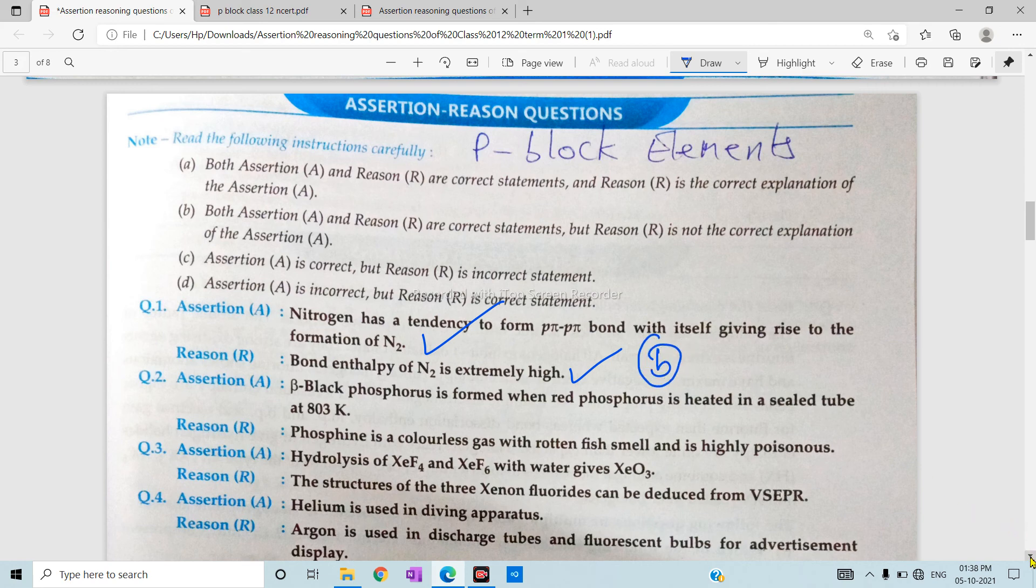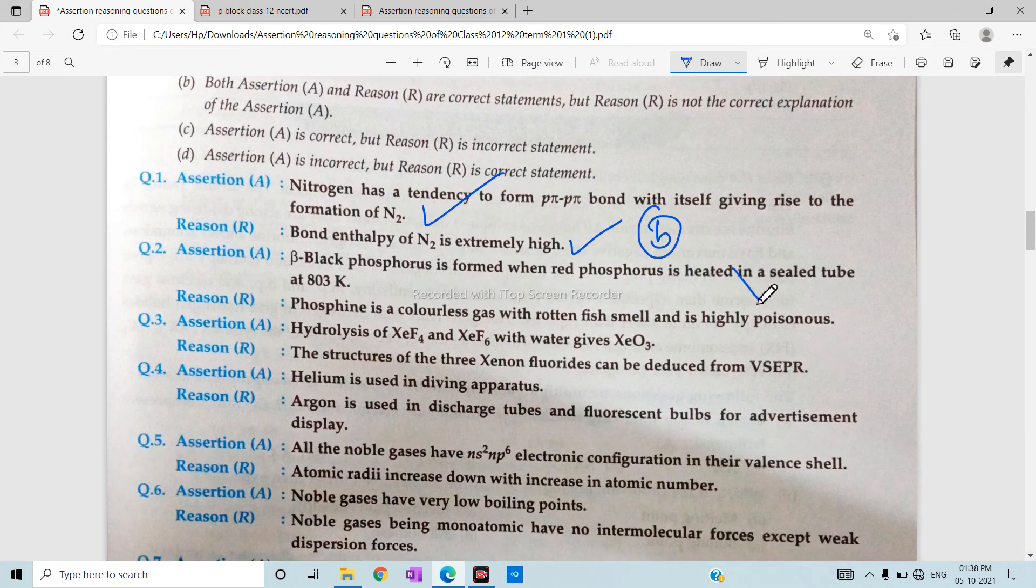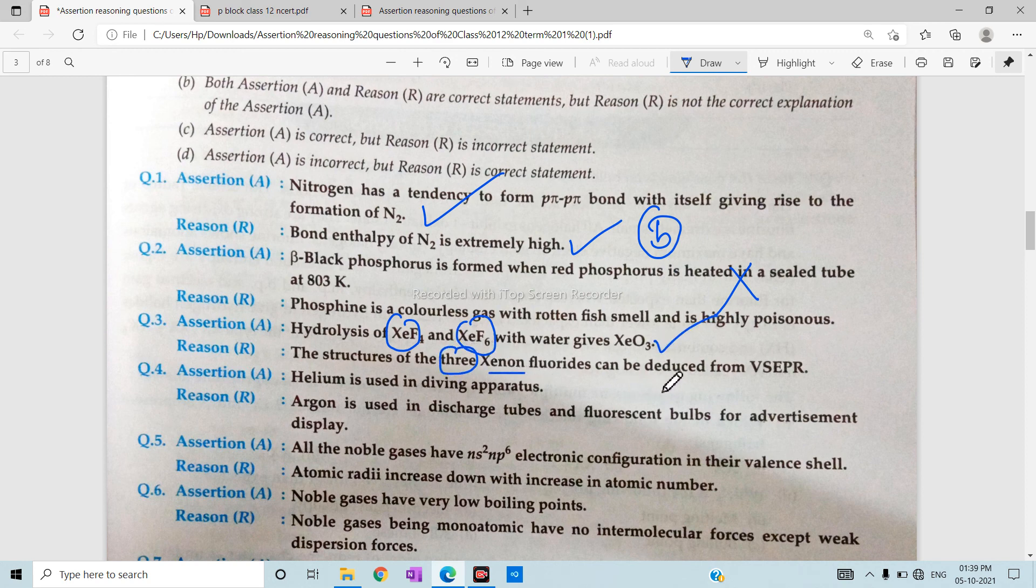Question number 2 is deleted, so we don't have to talk about it. Question 3: the structure of these xenon fluorides can be deduced from VSEPR theory. This is correct. And again, it is the correct explanation, so the answer is B.